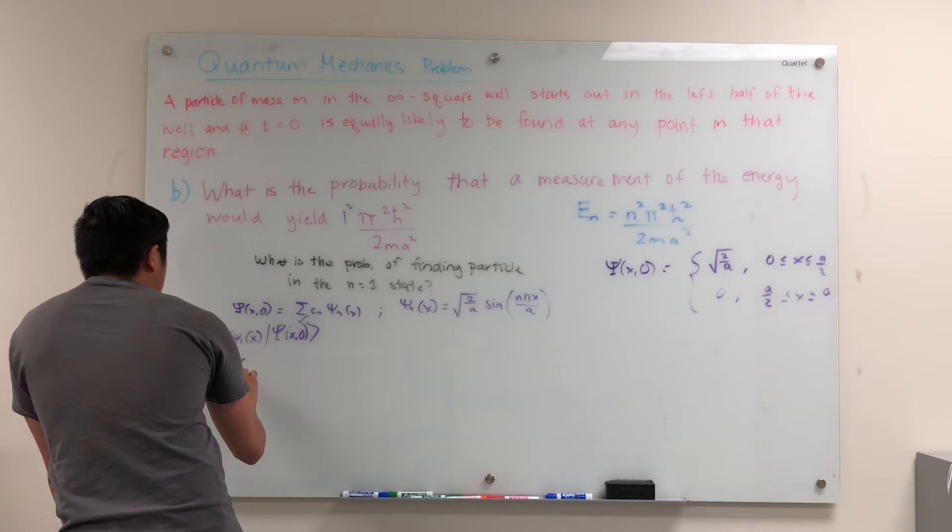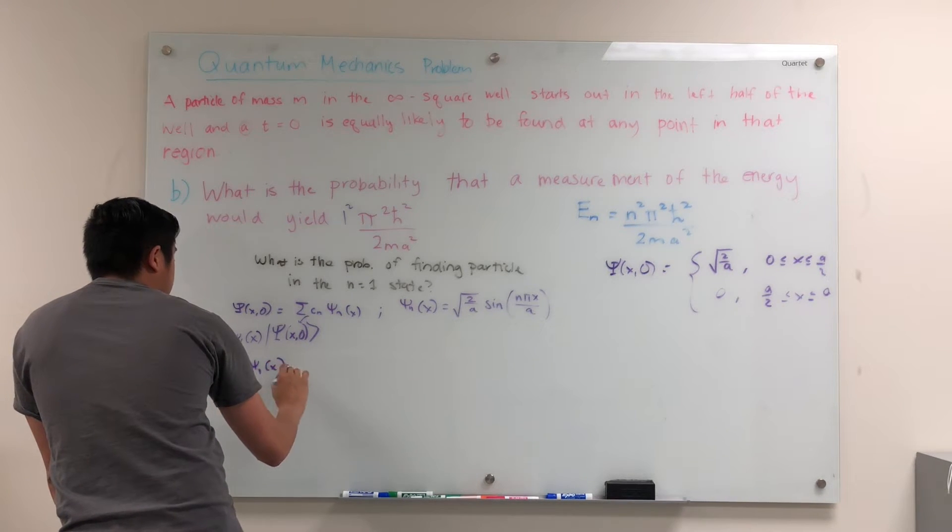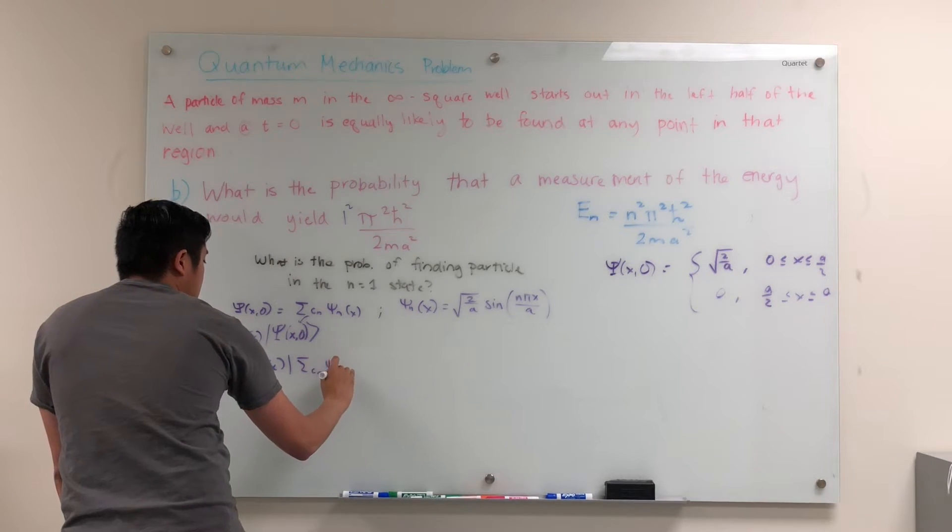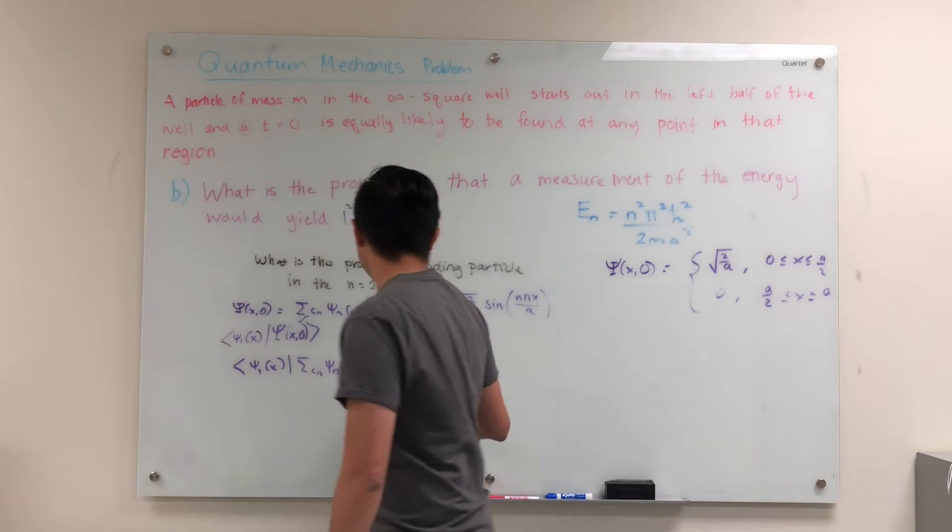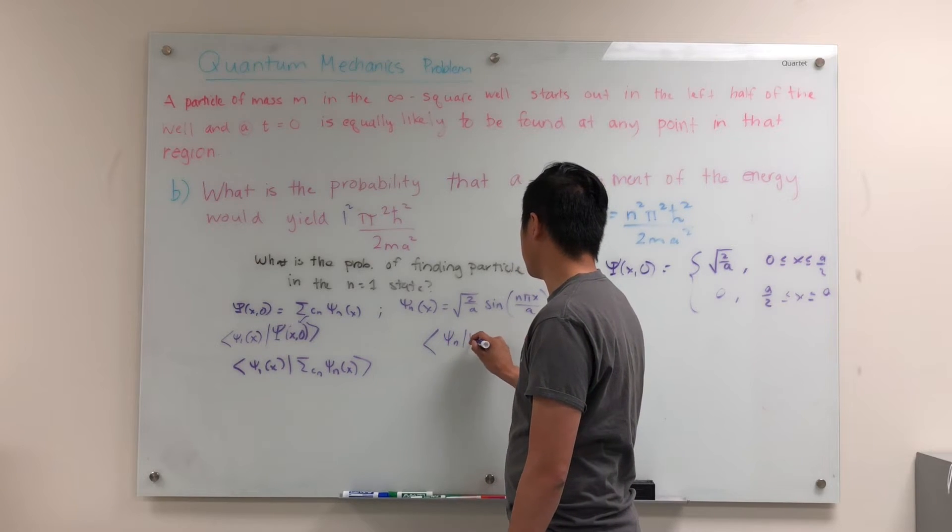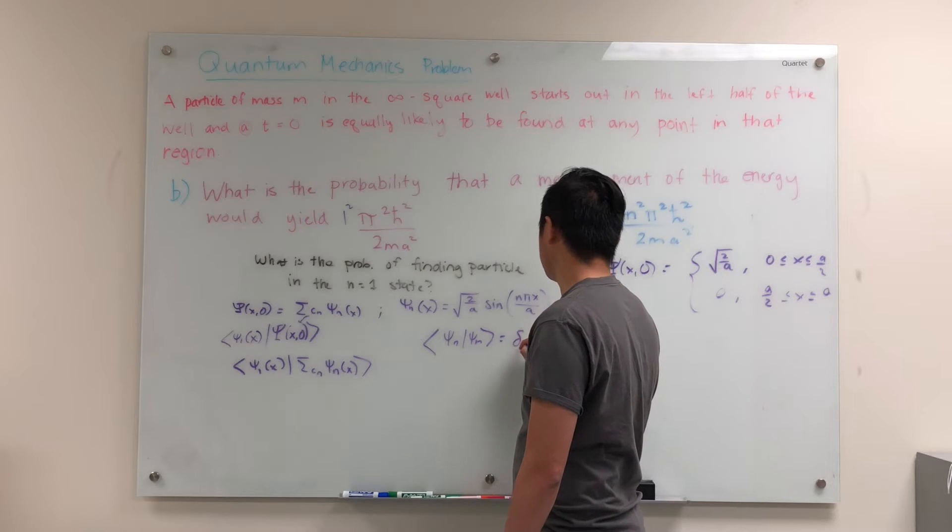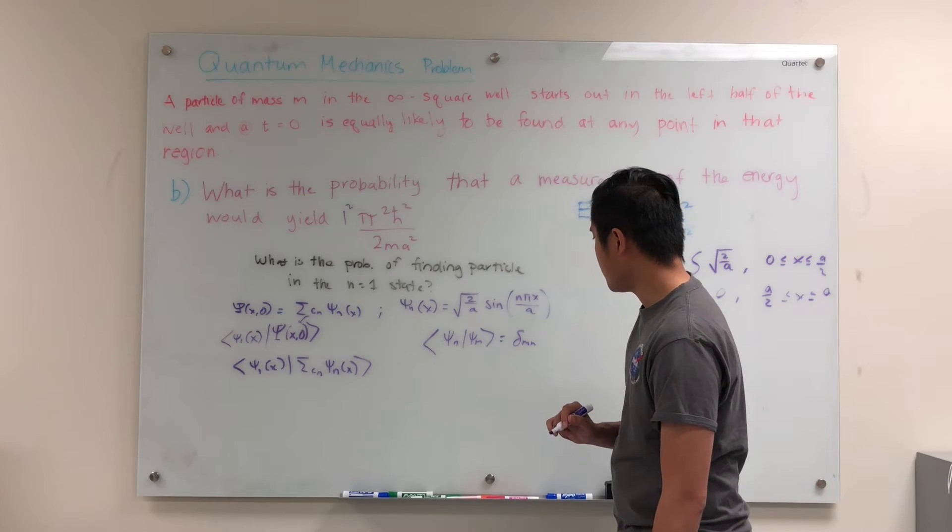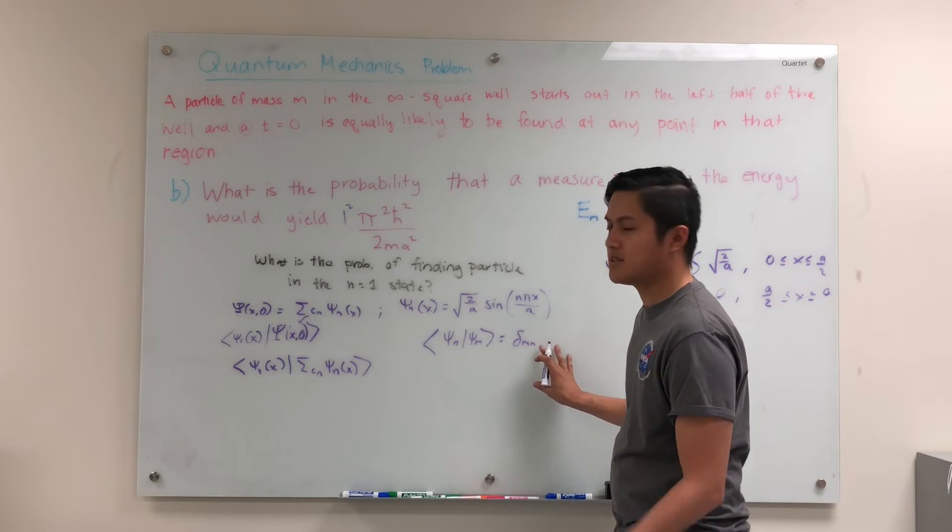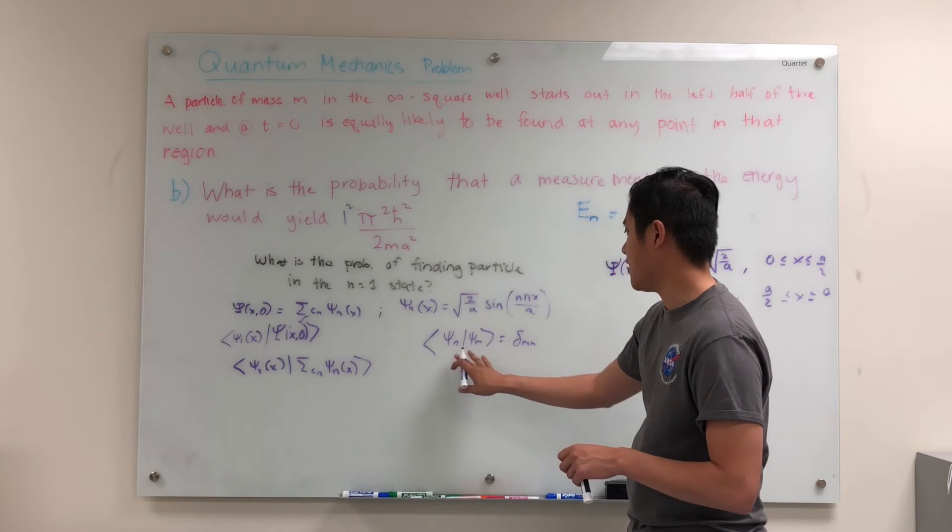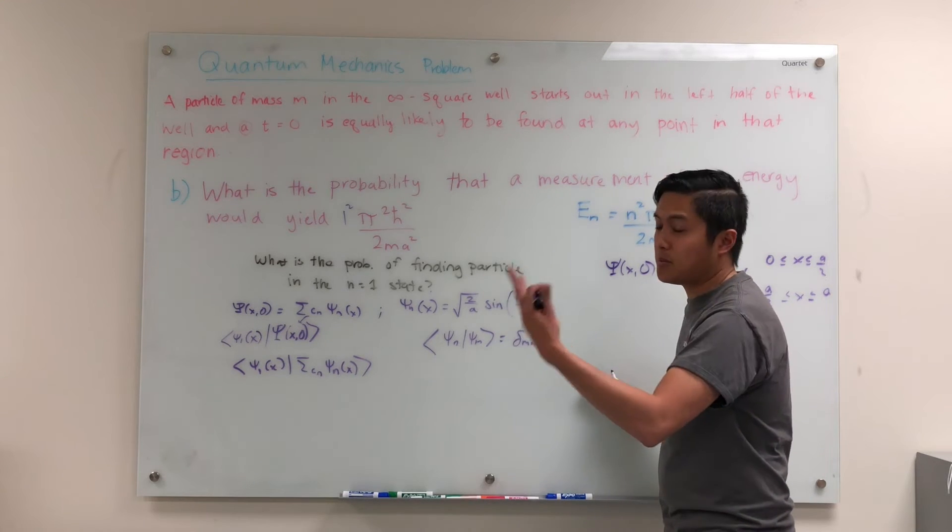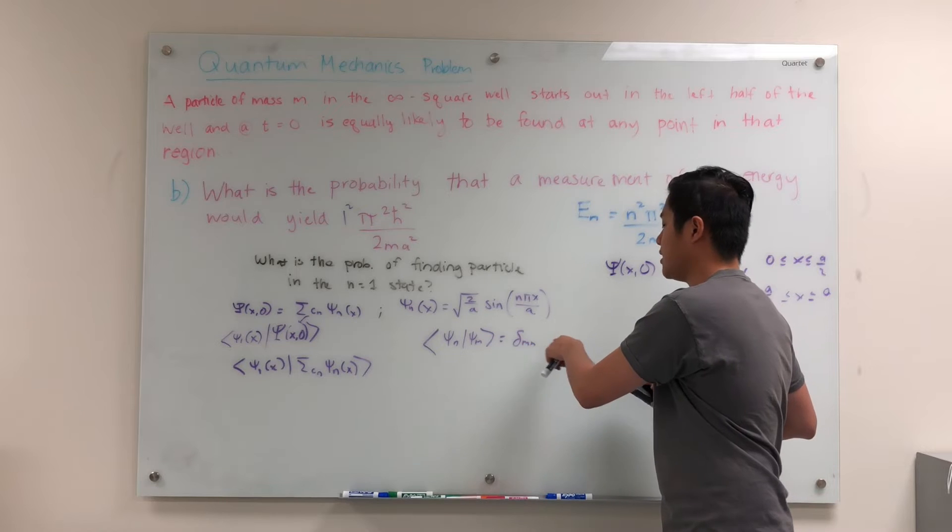what's going to happen is that we're going to have psi 1 of x on essentially sum Cn psi n of x. And we know that these wave functions are orthonormal. So we know that psi n on psi m is equal to delta m n. So we know that this should be 0 if this doesn't work out. So if n and m are different, this is just going to be Kronecker delta, so it's not going to give us anything. It's not going to be really meaningful unless we pick out the n equals m case.